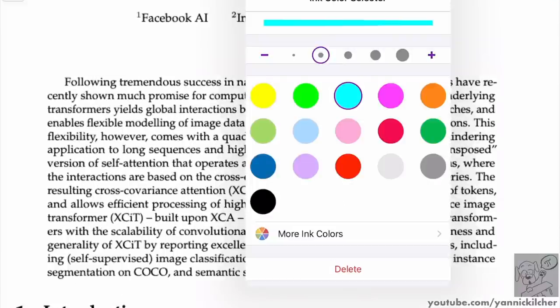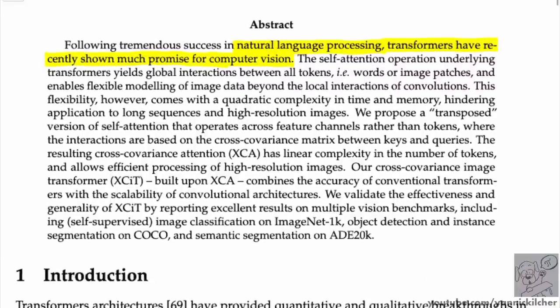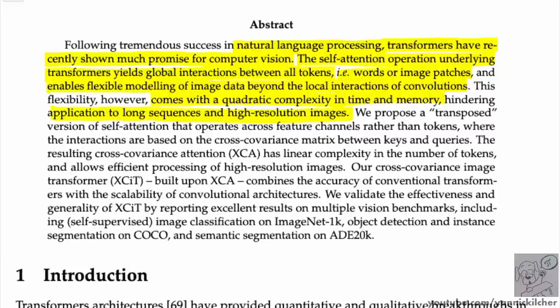The paper states: following tremendous success in NLP, transformers have recently shown much promise for computer vision. The self-attention operation yields global interactions between all tokens — words or image patches — enabling flexible modeling beyond the local interactions of convolutions. However, this flexibility comes with quadratic complexity in time and memory, hindering application to long sequences and high-resolution images.